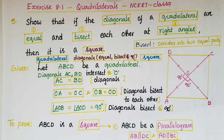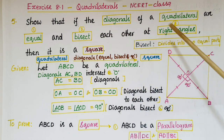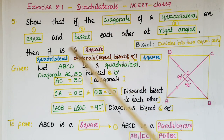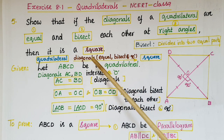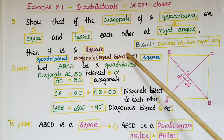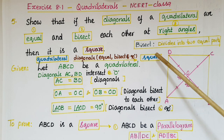Hello everyone. Today I am going to tell the solution of the 5th problem from exercise 8.1 from quadrilaterals from NCERT class 9. The problem states that if the diagonals of a quadrilateral are equal and bisect each other at right angles, then it is a square. We have to prove that if the quadrilateral has diagonals that are equal and bisect at 90 degrees, then it is a square.